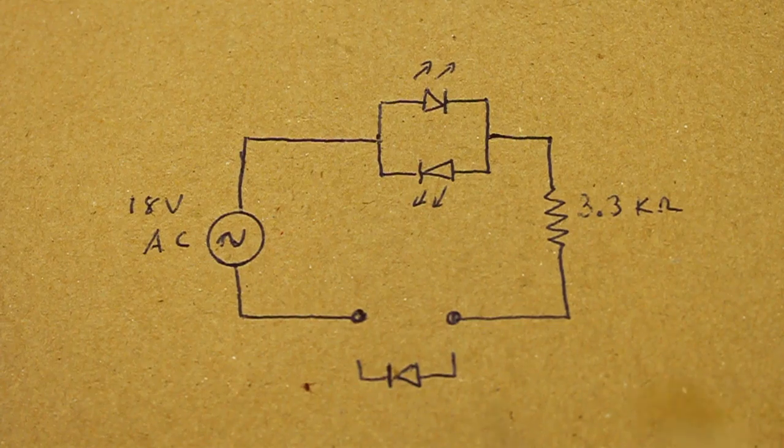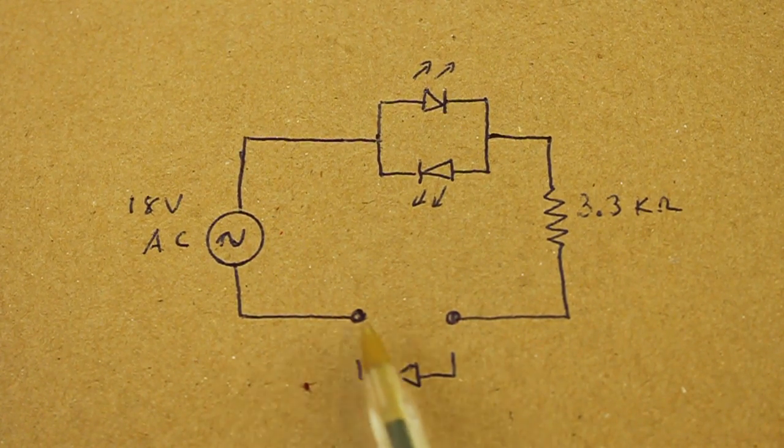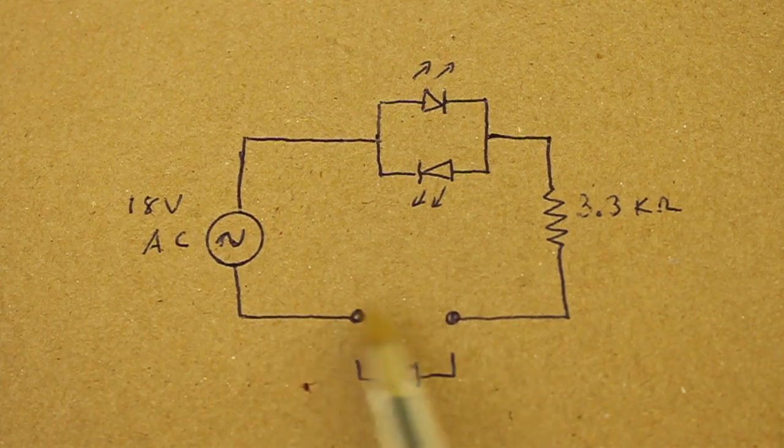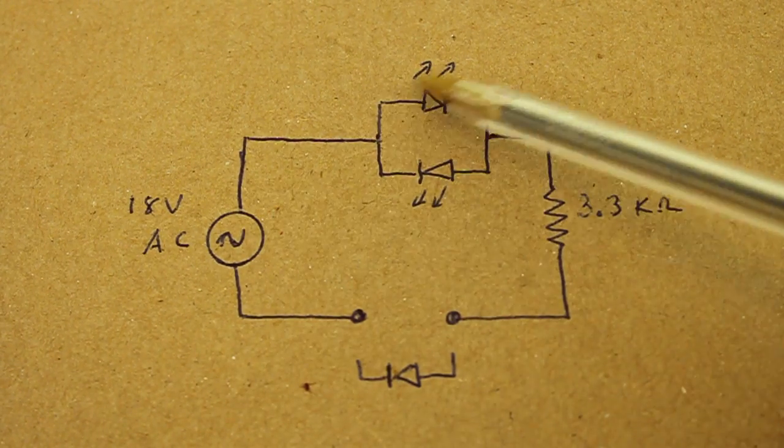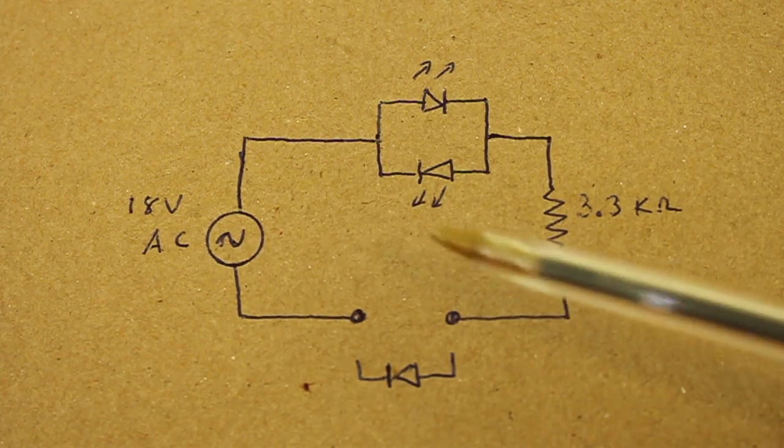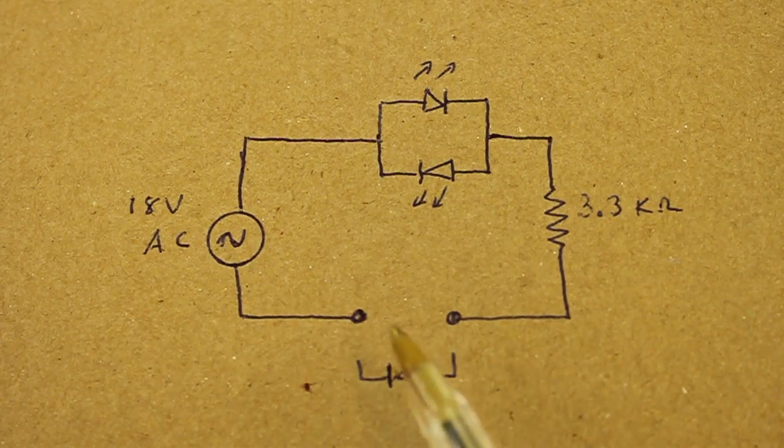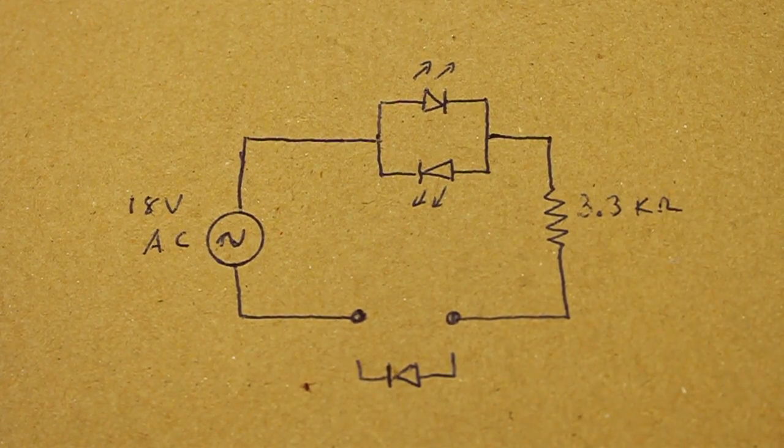On the other hand, if our test diode is shorted, then the current can flow in either direction here, and one LED will turn on on the positive cycle, and the other on the negative cycle. So, for a shorted diode, both LEDs will turn on.